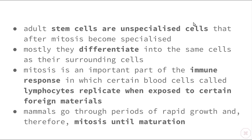Lastly, mammals go through periods of rapid growth and therefore rapid mitosis until maturation. Once they've finished puberty and reached maximum height, the same thing happens across all mammals — once they reach that age of maturation, mitosis slows down. It still obviously takes place, but just not as fast or as often. That brings us to the end of this video — thank you for watching.